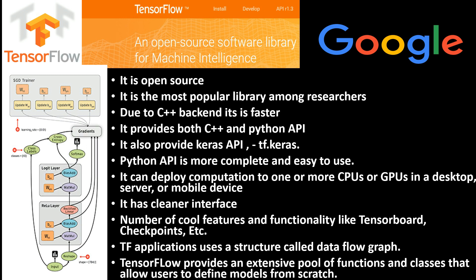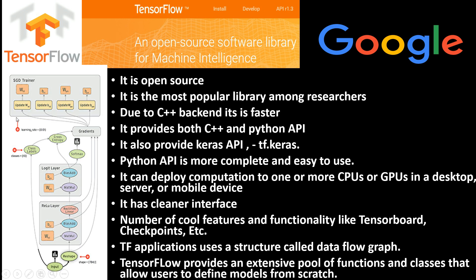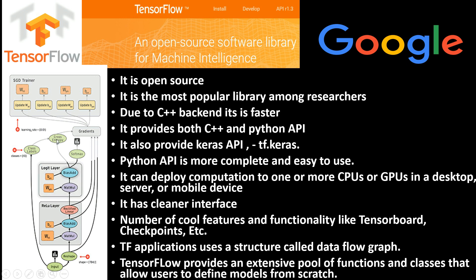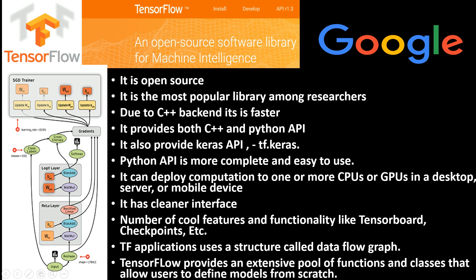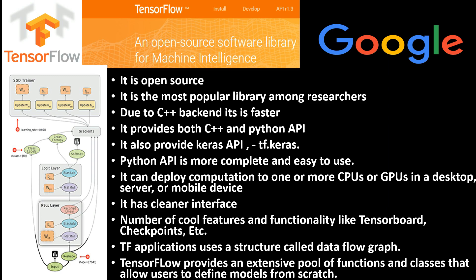Everything in TensorFlow is defined within a construct called a data flow graph. This is a graph where all the networks or models are defined — all the elements are described with nodes, and all the data flows between these nodes or operations. It's a really cool structure and we'll look into it when we implement it. Using TensorFlow, you can implement any model or network from scratch.